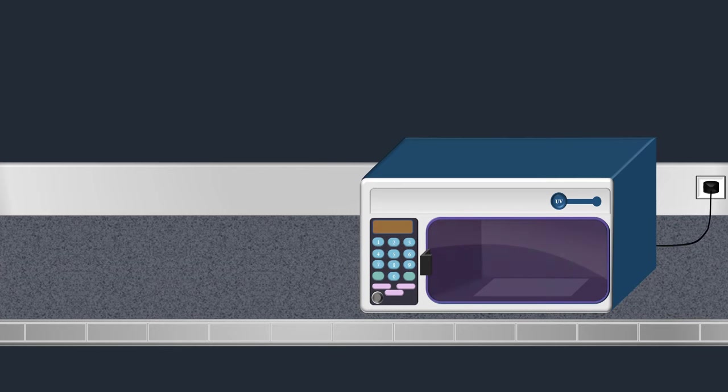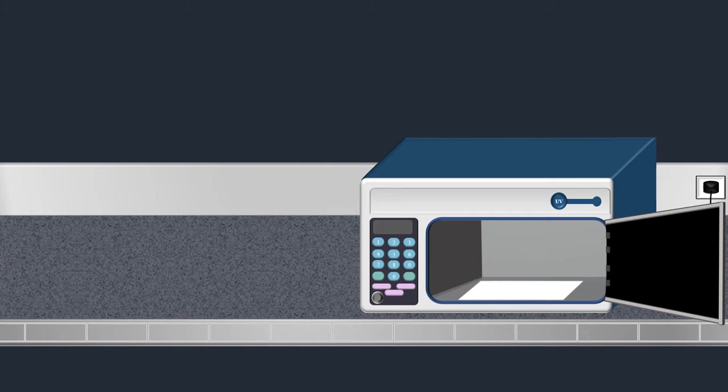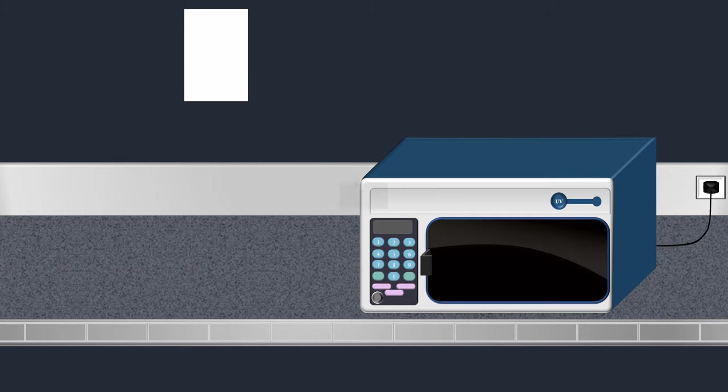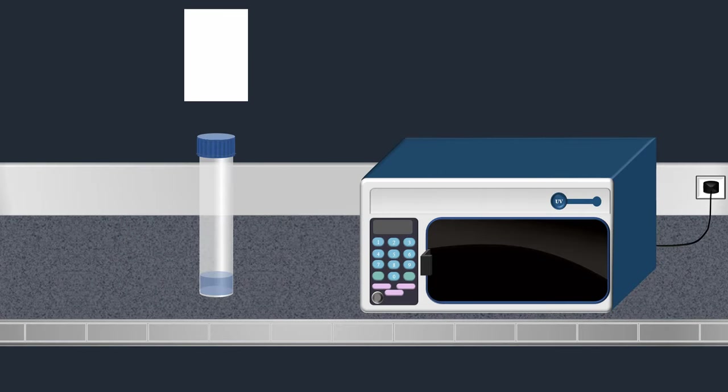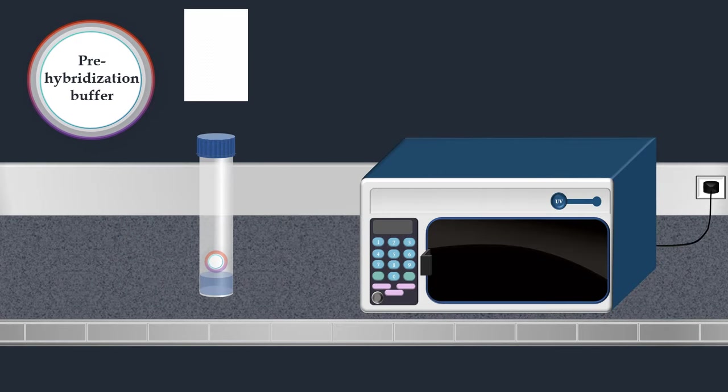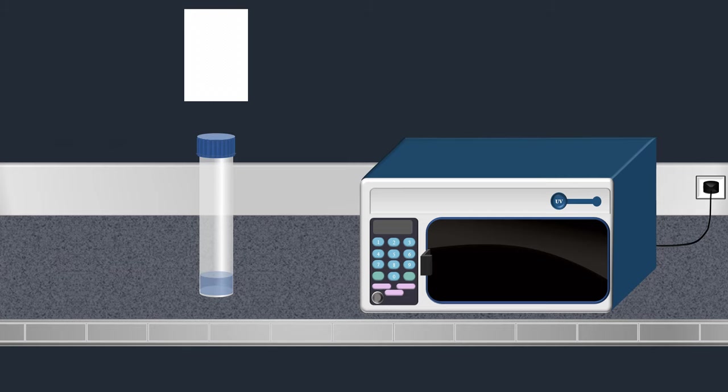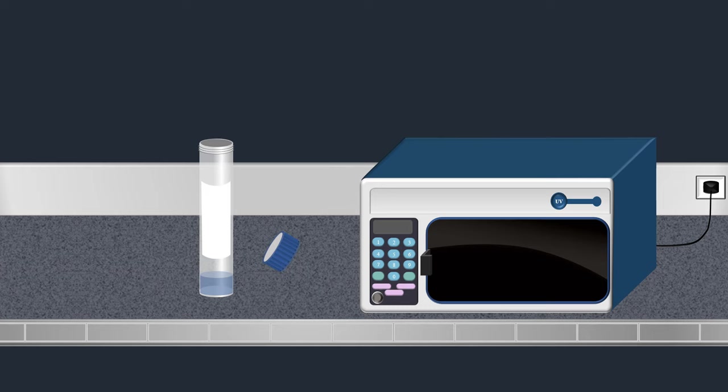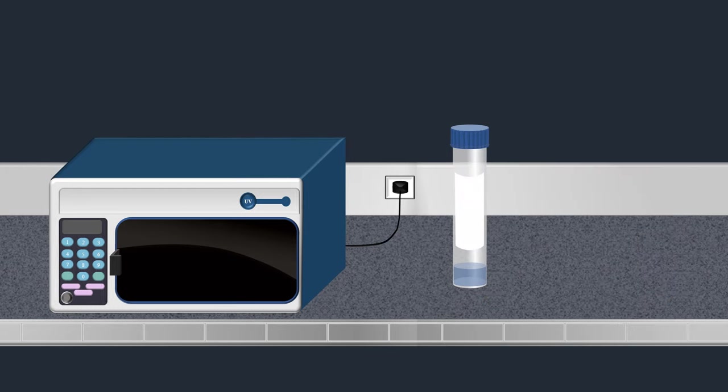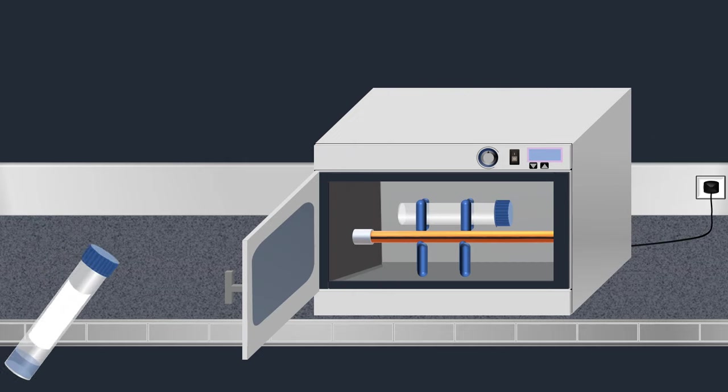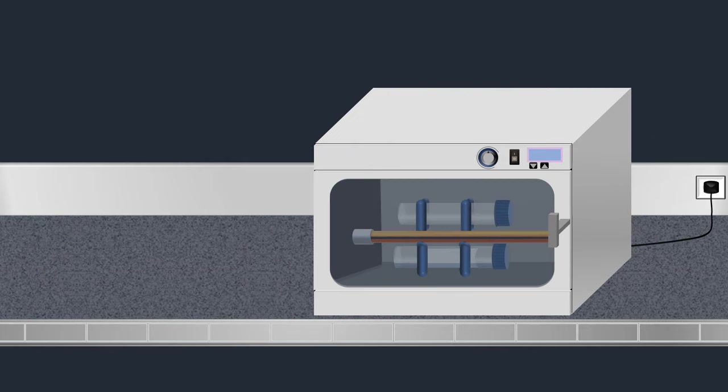After attachment of the DNA fragments to the membrane, hybridization with radio-labeled DNA probes is performed. The membrane is placed in a bottle containing a pre-hybridization solution, which is used to reduce non-specific hybridization with the probe. Next, the bottle is incubated in a hybridization oven at 42 degrees Celsius for two hours.